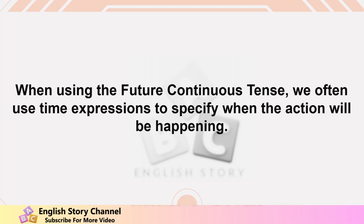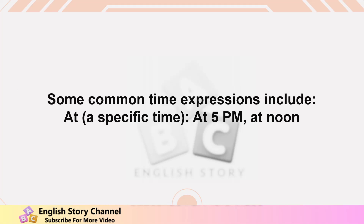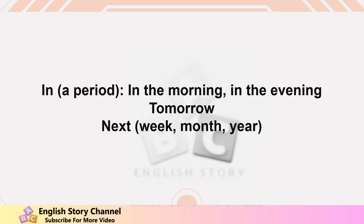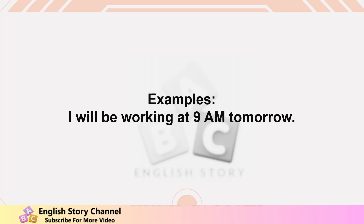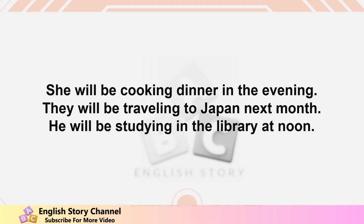Using Time Expressions. When using the Future Continuous Tense, we often use time expressions to specify when the action will be happening. Common time expressions include: at a specific time (at 5 p.m., at noon), in a period (in the morning, in the evening), tomorrow, next week/month/year. Examples: I will be working at 9 a.m. tomorrow. She will be cooking dinner in the evening. They will be traveling to Japan next month. He will be studying in the library at noon.